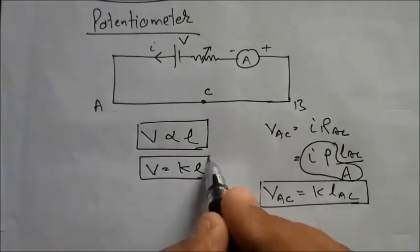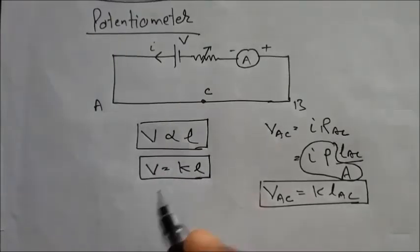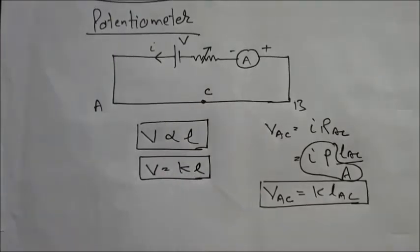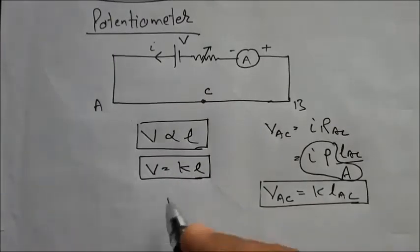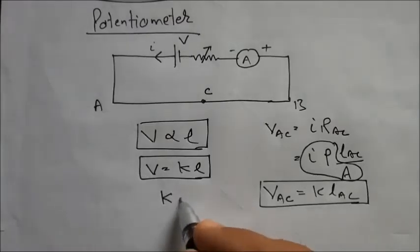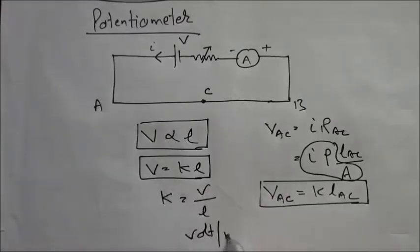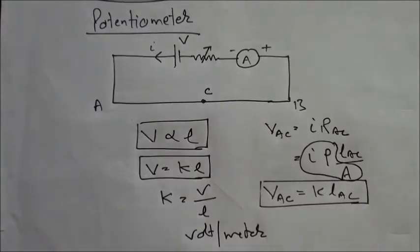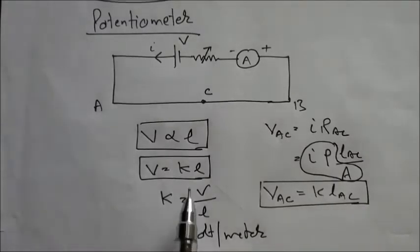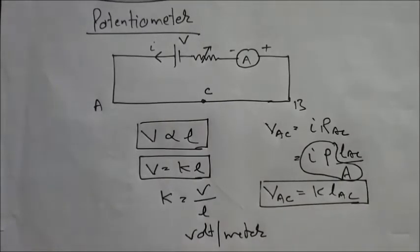K is called the potential gradient, defined as K = V/L. Its SI unit is volts per meter.